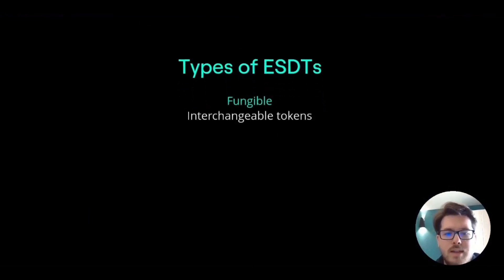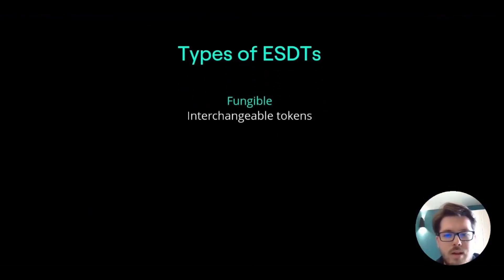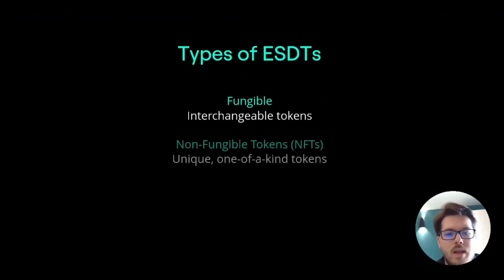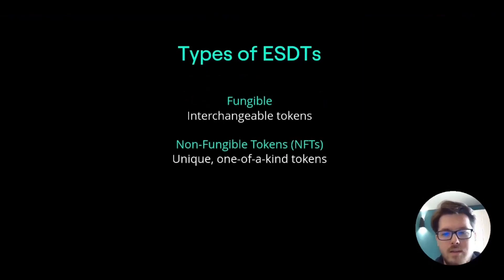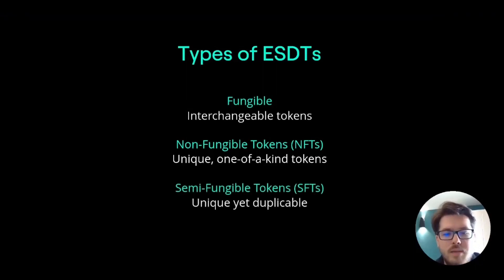ESDTs can be of three types. Fungible tokens are interchangeable, like coins, while non-fungible tokens are unique and one-of-a-kind, like digital artwork. Semi-fungible tokens combine both of these properties.